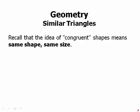Now we can talk about similar triangles. Recall the idea of congruent. If shapes are congruent, it means they have the same shape and the same size. For example, these are two congruent shapes. They don't have to be in the same orientation — we can flip them around, we can rotate them — but these are essentially the same shape. The corresponding sides have equal length, the corresponding angles are equal. They are exactly the same shape, just in different orientations.